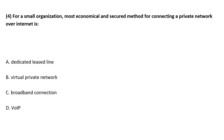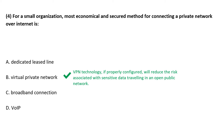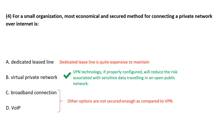Practice question: For a small organization, what is the most economical and secured method for connecting a private network over the internet? VPN technology will reduce the risk associated with sensitive data traveling in an open public network, and it is also one of the most economical methods as compared to other options. Other options are not secure enough as compared to VPN.